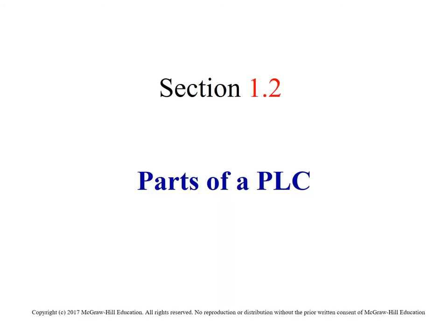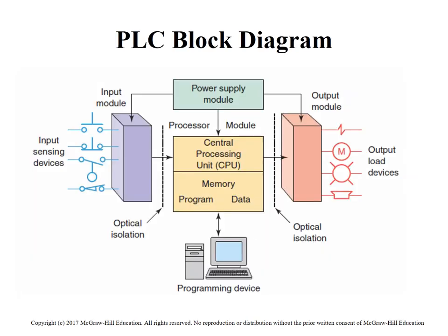Section 1.2: Parts of the PLC. We have a series of components: an input module, an output module, the CPU, and they also include the power supply. When you're looking at a modular-style PLC with multiple slots and multiple points of inputs and outputs, you have a modular power supply, a CPU, and a series of input and output modules, possibly a communication module, analog in or analog out modules, or even a servo module.